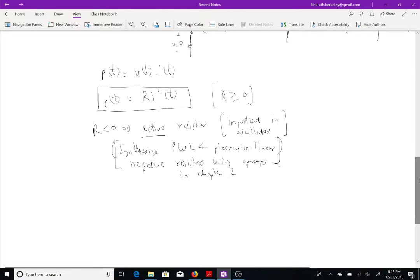We'll synthesize piecewise linear negative resistors using operational amplifiers or op-amps in chapter 2. And, again, so we've just, I mentioned active resistors. So, now let's move on and actually talk about non-linear resistors. So, in keeping up with the theme of this book, we'll only discuss linear resistors as special cases of non-linear resistors whose symbol is given like so.